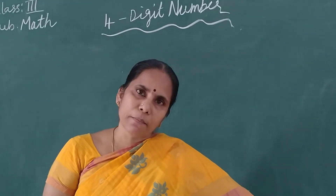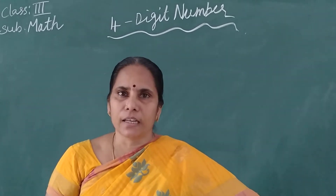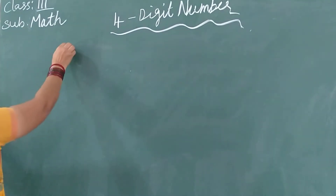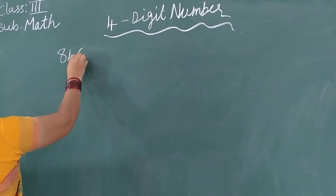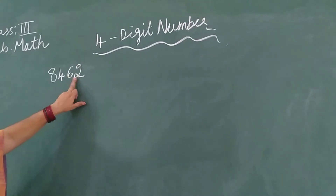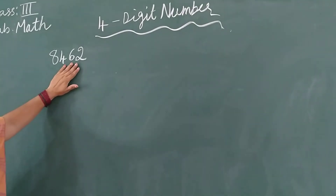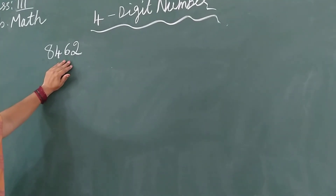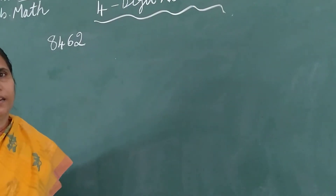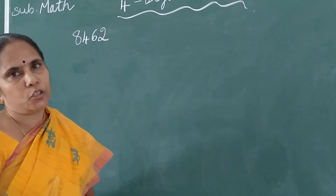Today we will learn 4-digit numbers, the place value, and the number name. Here I will write some 4-digit numbers. I wrote 8, 4, 6, and 2 — that is one 4-digit number. And here 2, 6, 4 and 8. You must also know where to put commas. In a 3-digit number there is no comma, but if a 4-digit number is there, commas will be there.